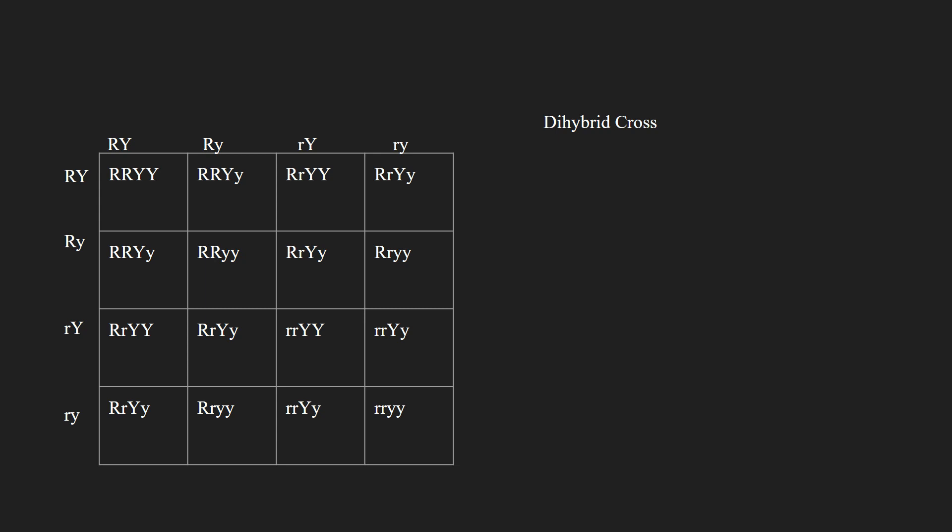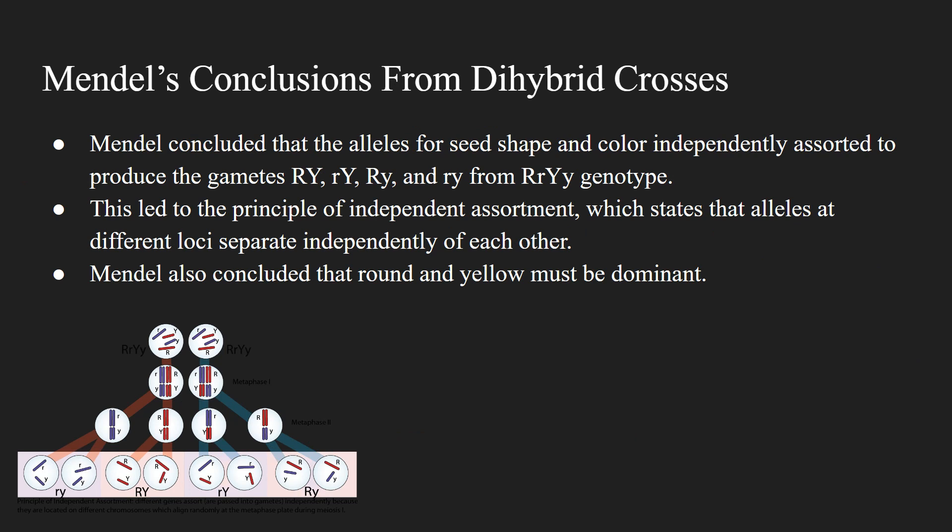Mendel concluded from dihybrid crosses that alleles for seed shape and color independently assorted to produce the gametes. This led to the principle of independent assortment, which states that alleles at different loci separate independently of each other. Mendel also concluded that round and yellow must be dominant. The principle of independent assortment is really just an extension of the principle of segregation, which states that alleles separate with equal probability into gametes.